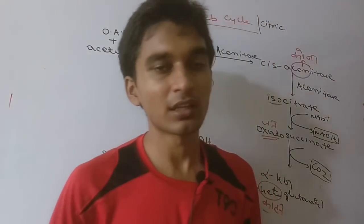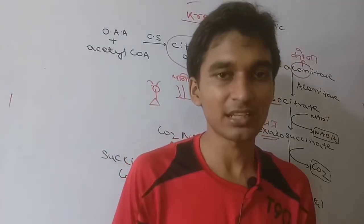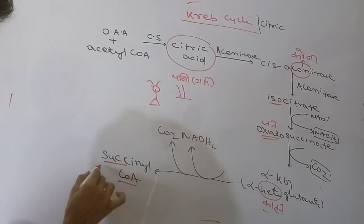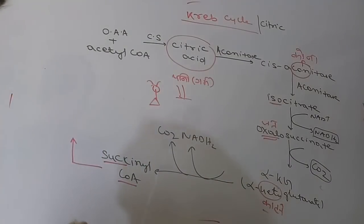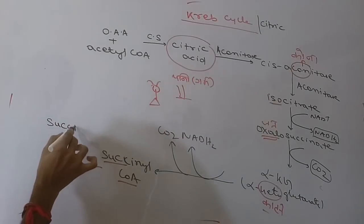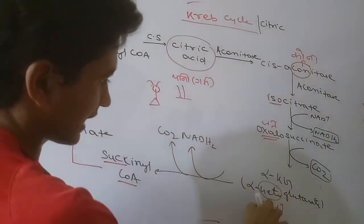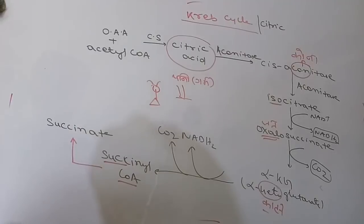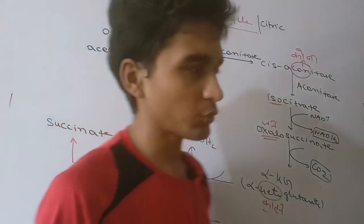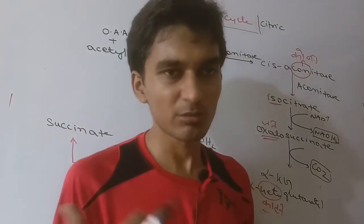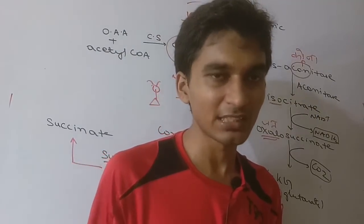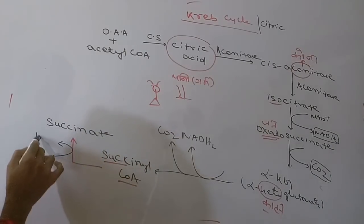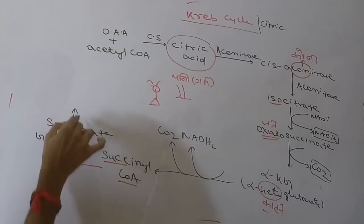Alpha-ketoglutarate will be converted into succinyl CoA. Then for the next step — to be successful — GDP formation occurs. GDP means gross domestic product here as a mnemonic, representing the GDP formation step. Succinate is formed from succinyl CoA with GDP formation.